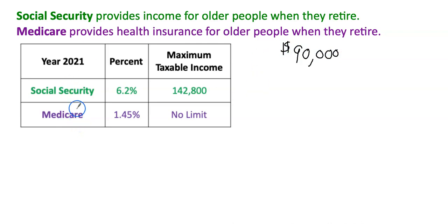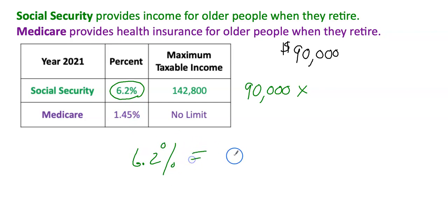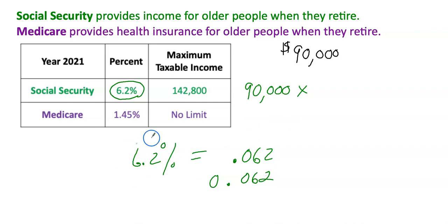What you need to do is take $90,000 and multiply it by 6.2 percent. Remember that 6.2 percent equals 0.062. One way to get this decimal is to take 6.2 and divide it by 100 on your calculator, because percent means to divide out of 100.